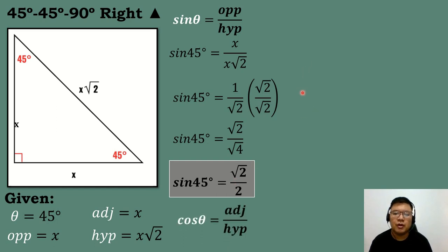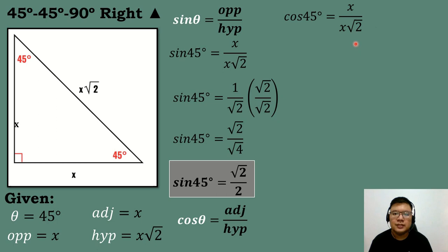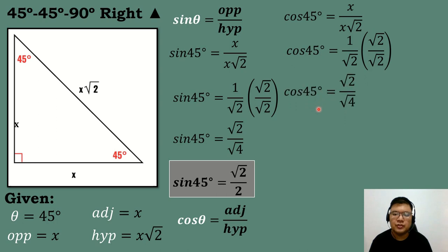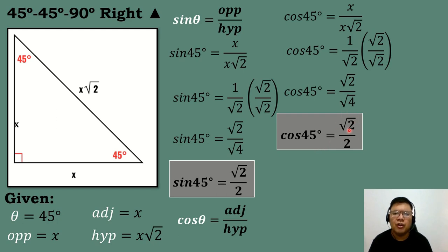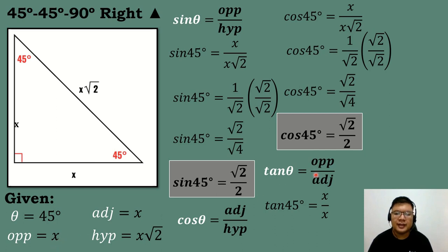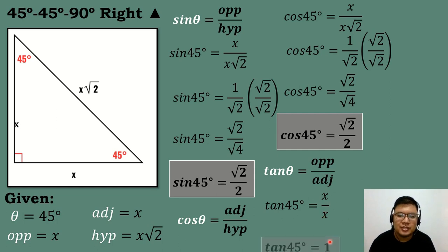Next, let's compute for the value of cosine 45 degrees. The adjacent side is equal to x, and the hypotenuse is equal to x square root of 2. Since sine 45 degrees and cosine 45 degrees have the same solution, they will have the same answer. So cosine 45 degrees equals square root of 2 over 2. Next, the value of tan 45 degrees: the opposite side is equal to x and the adjacent side is equal to x. So x over x equals 1. Tan 45 degrees is equal to 1.